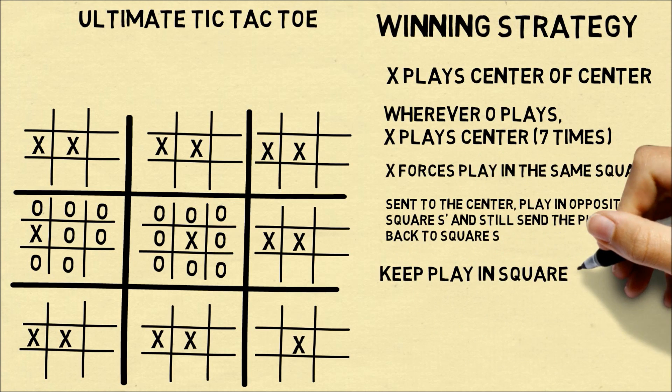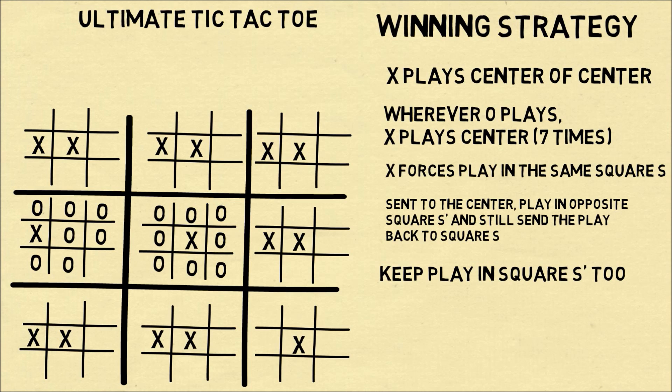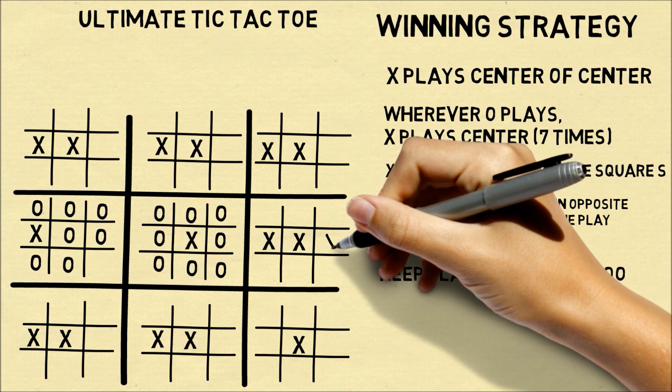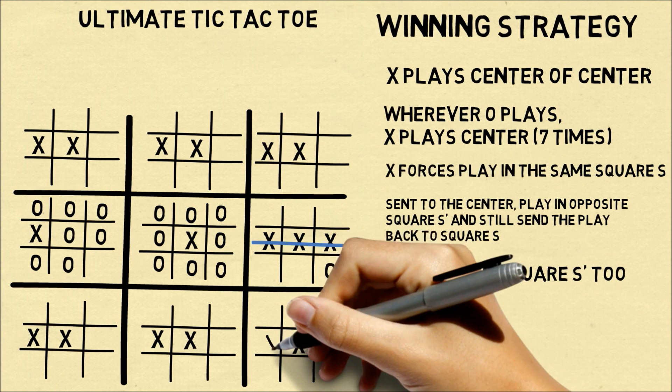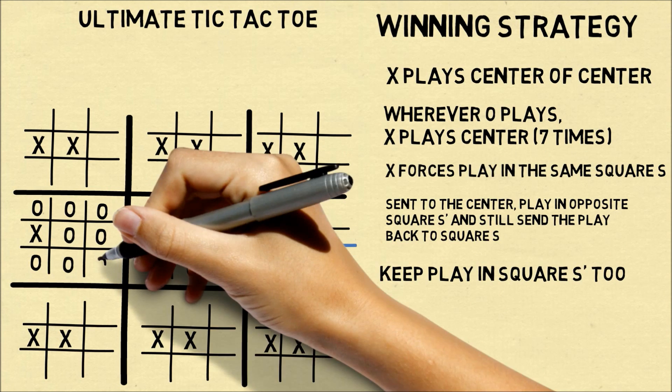At some point, you may not be able to send O back to the middle left. So then you repeat the strategy a third time. You have completed a 3 in a row, and now you have the middle right.